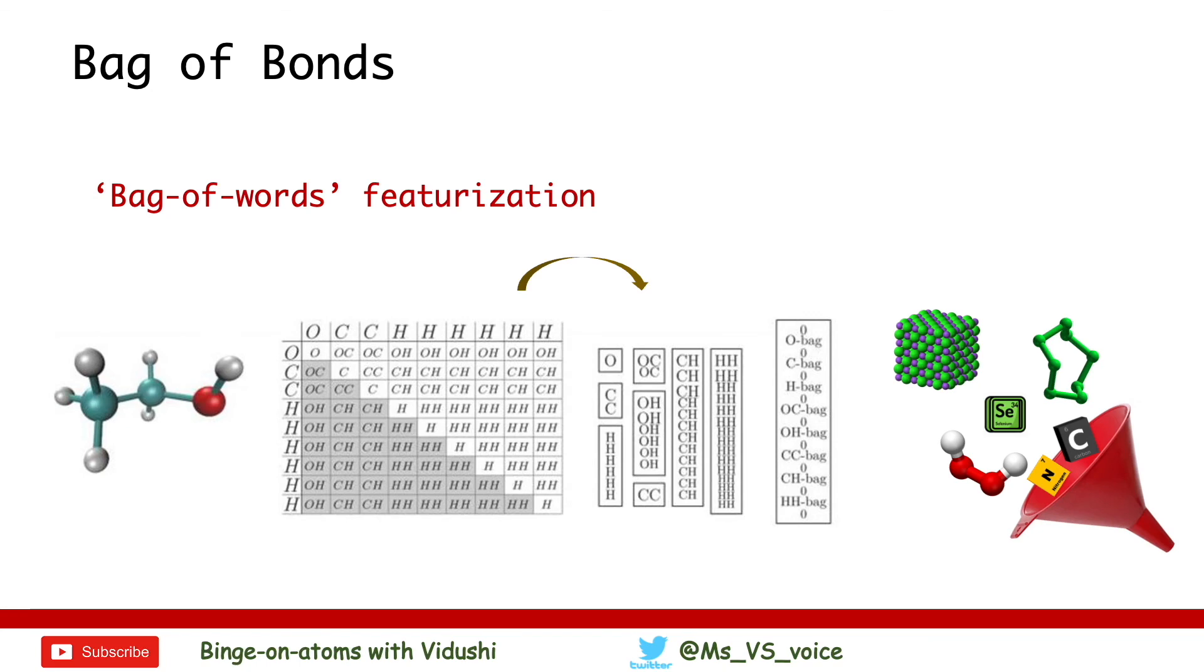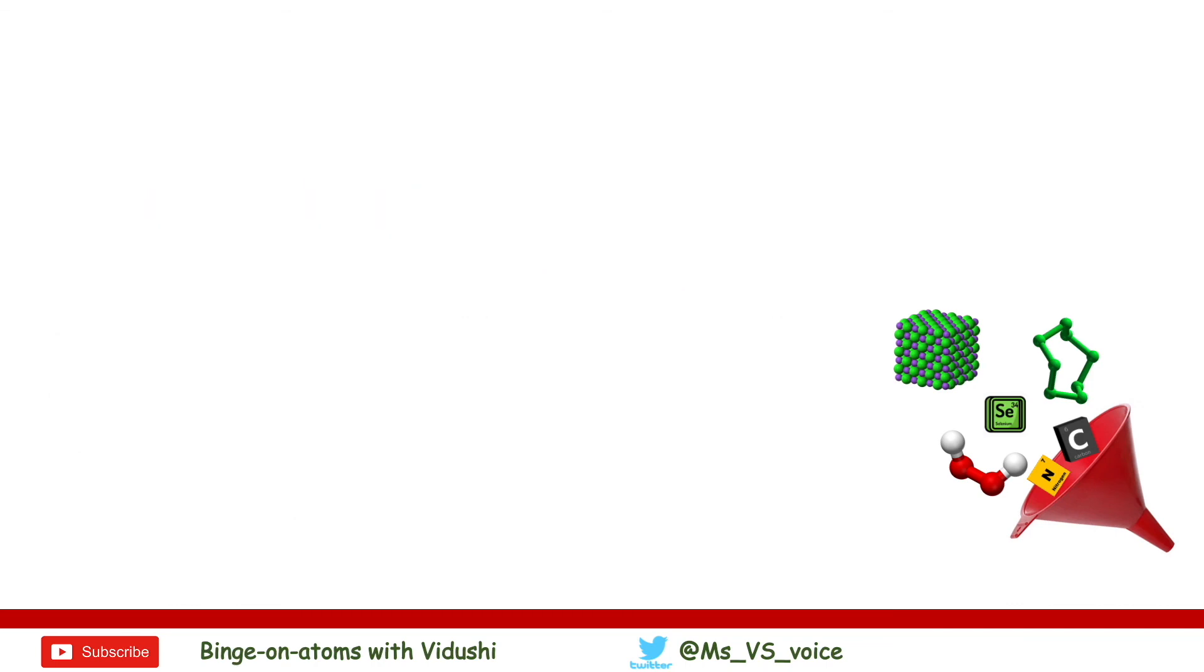Bonds are distinguished by the atoms involved and the order of the bonds such as single bond, double bond and triple bond. Coulomb matrix elements can be segregated within each bag according to their magnitudes.